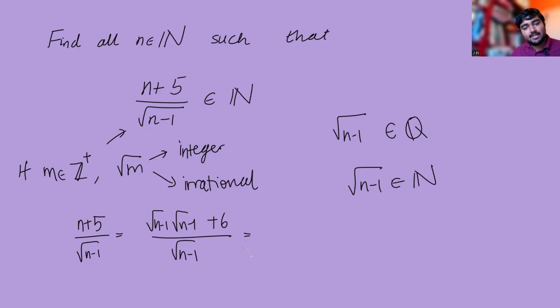Let's simplify this. So one of the root n minus 1s cancels there. So I get root n minus 1 plus 6 over root n minus 1, like so.